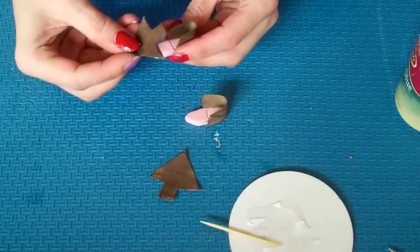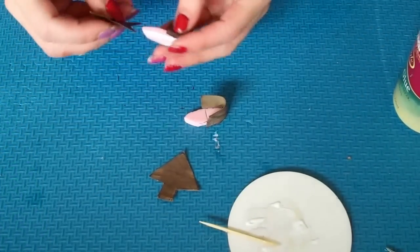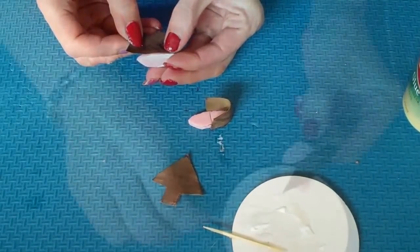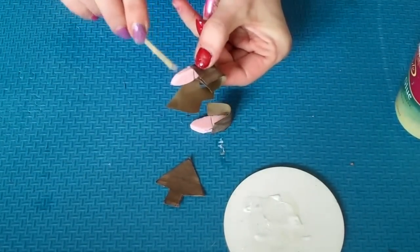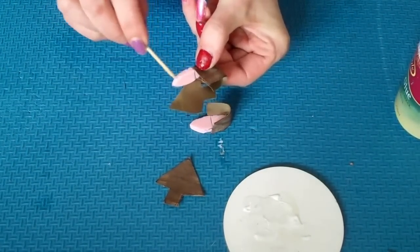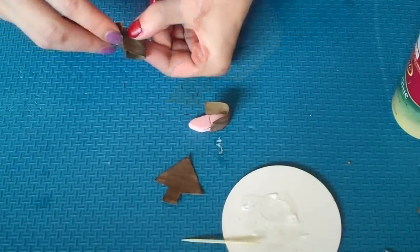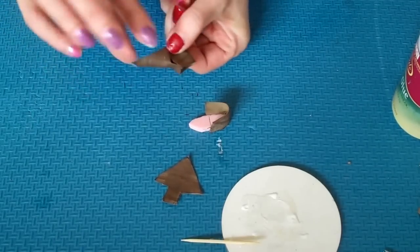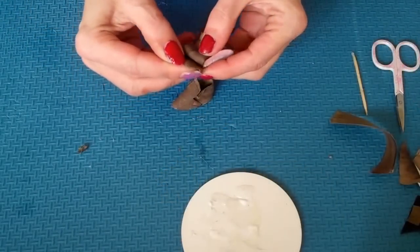So next we want to get our triangle and we want to start gluing that. So just start by putting some glue on your foam. This glue dries very quickly, so you've got to work fast. And then just start gluing that from the back.